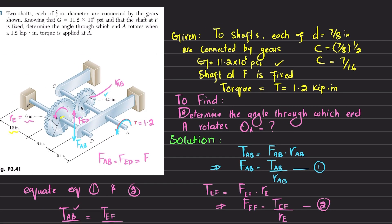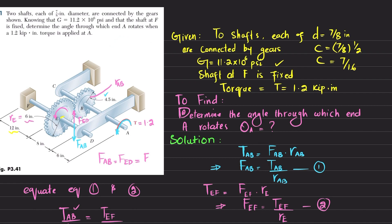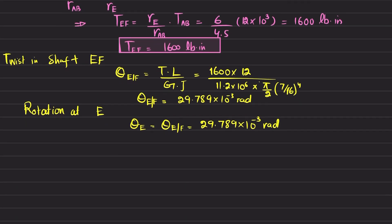To understand what this means geometrically: if point E is at some position, its new position will be E′ and θE is the angle of twist. I will draw it so you can easily understand — if this is the gear and this is point E, due to the twist, it moves to E′ through angle θE.